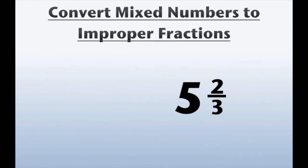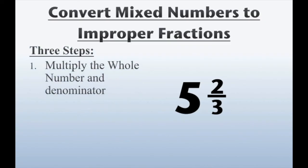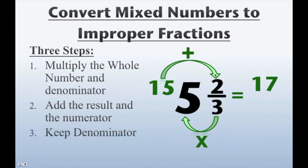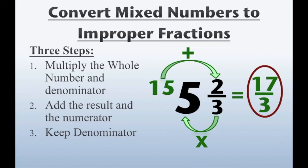So, how do we convert from mixed numbers to improper fractions? Well, there are 3 steps. Step 1 is to multiply the whole number and the denominator. We've got our denominator here and our whole number here — 3 times 5, and that's going to give us 15. Step 2: add the result and the numerator. That's 15 plus 2, and 15 plus 2 is 17. And step 3 is to keep the denominator, which was 3. So our answer is 17 over 3. Therefore, 5 and 2 thirds is equal to 17 thirds as an improper fraction.